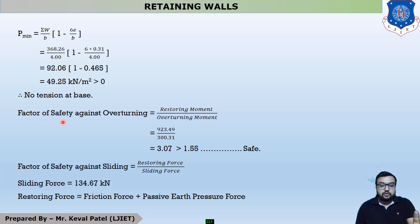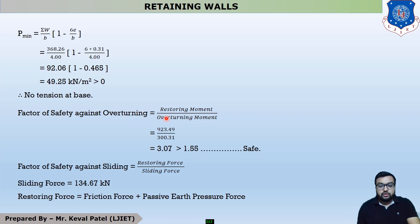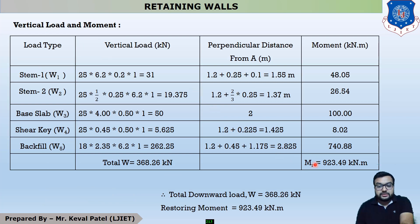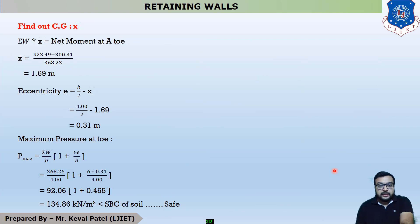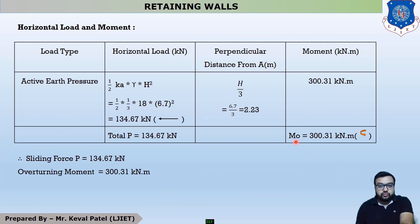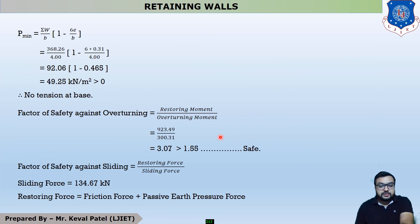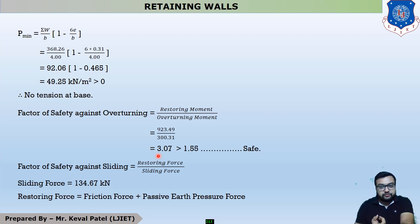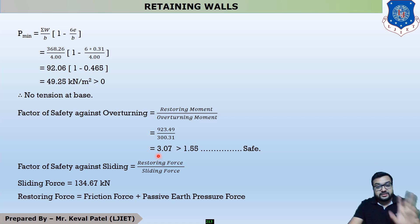Our third stability check is factor of safety against overturning. The equation is restoring moment divided by overturning moment. The restoring moment value is 923.49 kN·m and the overturning moment due to horizontal force is 300.31 kN·m. We get an answer of 3.07, and since the minimum factor of safety against overturning is 1.55, this answer is greater than 1.55, so we are safe against overturning. We pass three stability checks.